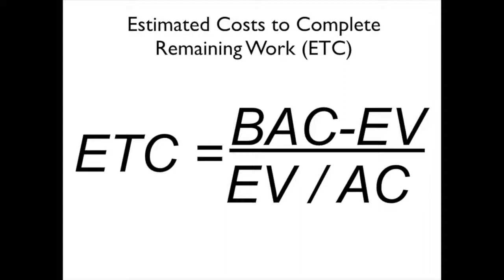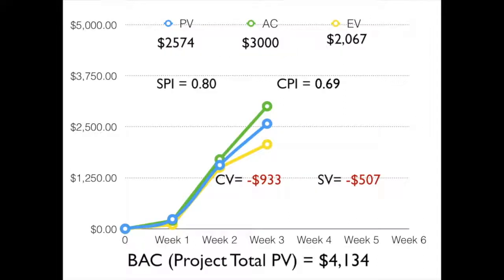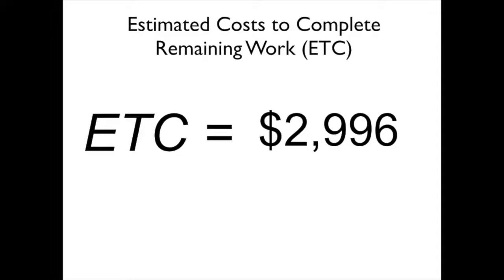is the BAC minus EV, over EV divided by AC. That EV divided by AC is essentially our CPI, so what we're basically doing is applying our current CPI to the remaining work, and then we can come up with a value for what it's going to take to actually get that remaining work done. In this case, we calculate it out and we get an ETC of $2,996.